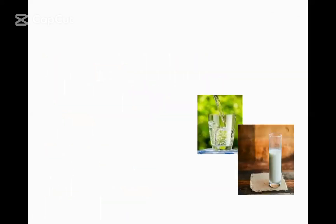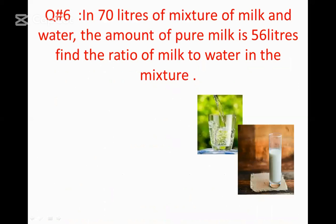Now look at this — this is a glass of water and this is a glass of milk. In 70 liters of a mixture of milk and water, the amount of pure milk is 56 liters. The total mixture is 70 liters. Find the ratio of milk to water in the mixture.